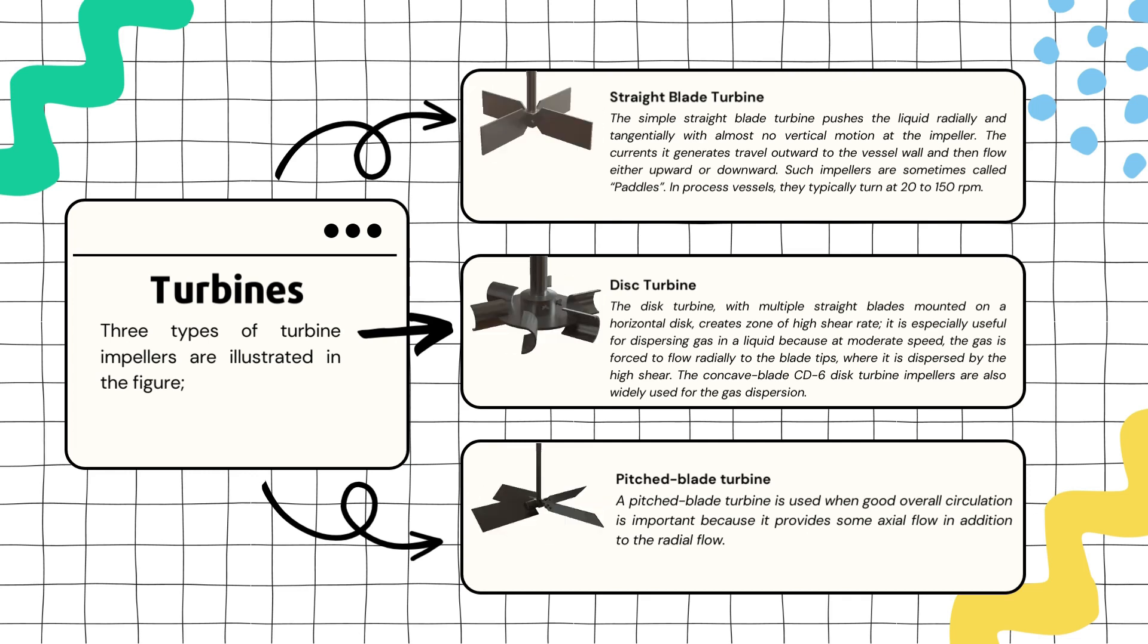Think of a propeller with slightly tilted blades, which helps create a mix of flow directions for thorough mixing in various applications. In summary for turbines, these different types are like specialized tools for mixing liquids in various ways. Some push the liquid outwards, some create higher shear for gas dispersion, and others offer a mixture of axial and radial flow for good overall circulation.